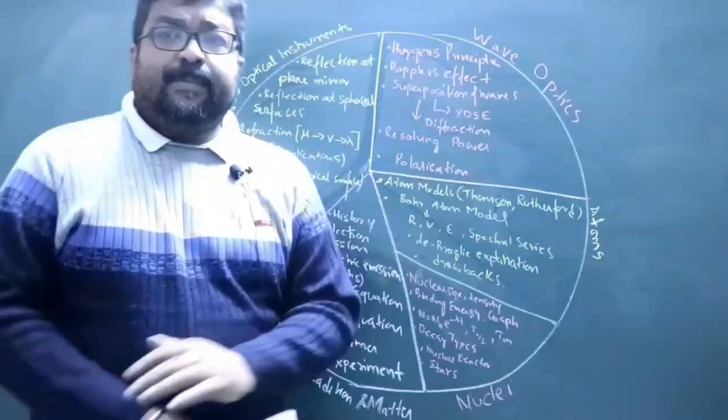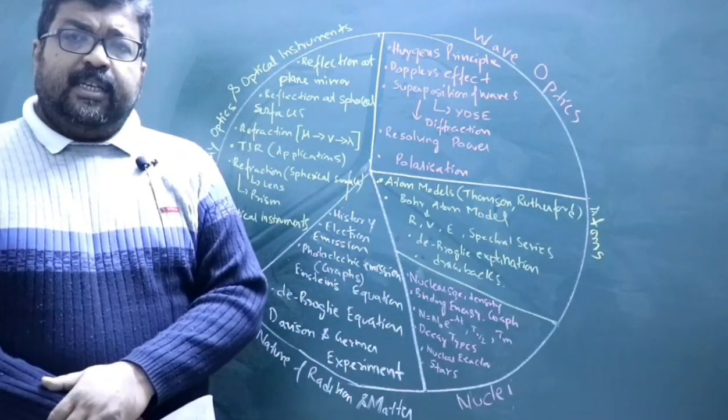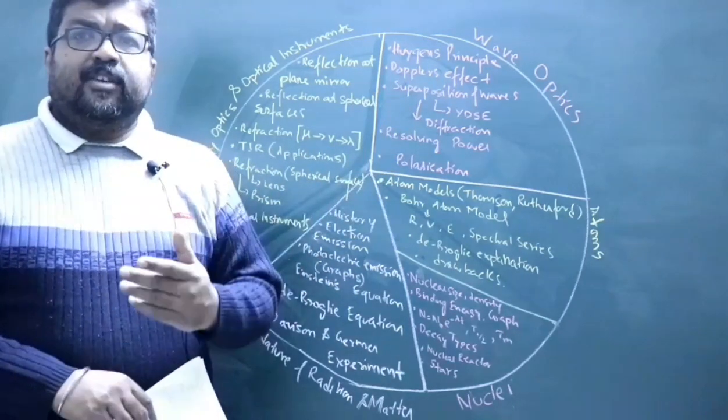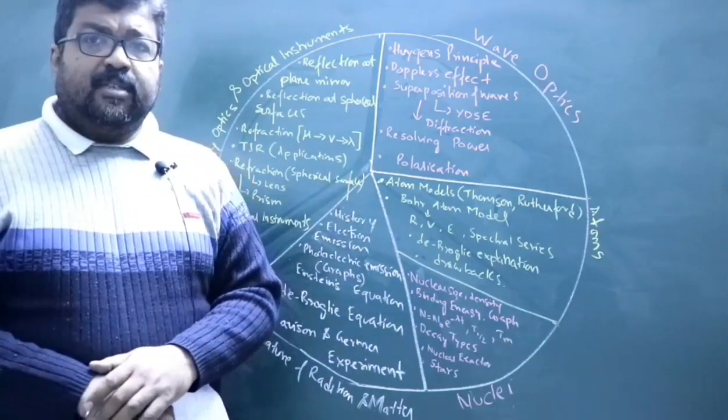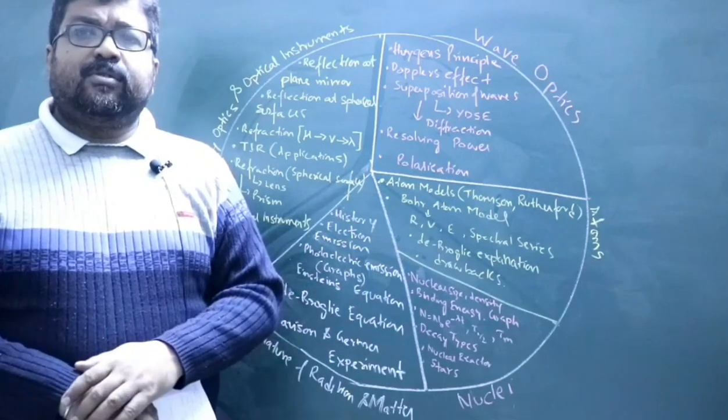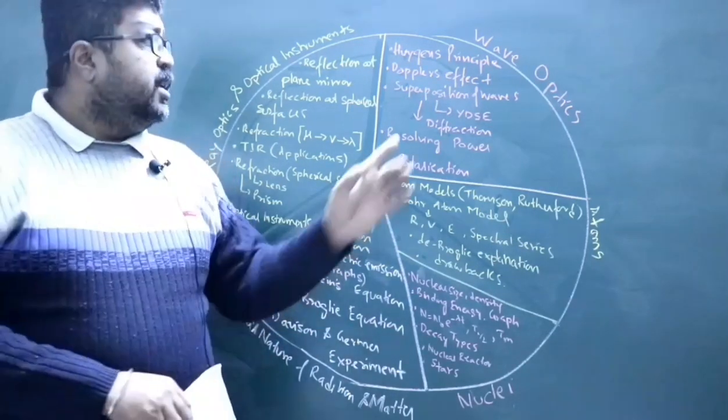Then you have the chapter wave optics, which starts with Huygens' principle. Then using Huygens' principle, how to obtain the laws of reflection and laws of refraction. Then the Doppler effect - numericals based on Doppler effect are important, but you can try out only those questions which are there in NCERT. There's a solved example on this.